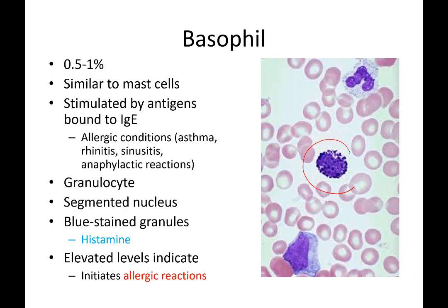Basophils tend to be polka-dotted — you will see them as lots of blue dots. They also have a crazy nucleus, but it's often obscured by the blue dots. What's in the blue dots? Histamine. When you take an antihistamine, you are blocking basophils from releasing these histamine granules — for example, if someone has a pollen allergy entering through the nasal cavity. Basophils play a prominent role in allergic reactions, so if their numbers are elevated, the person is having an allergic reaction.